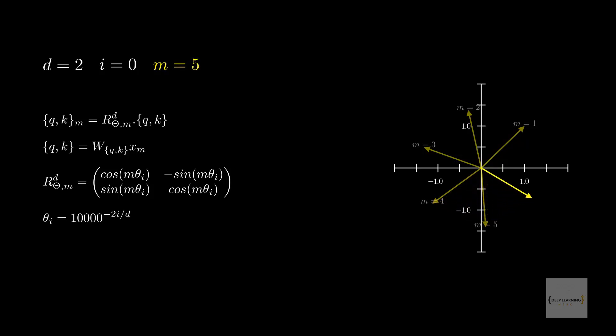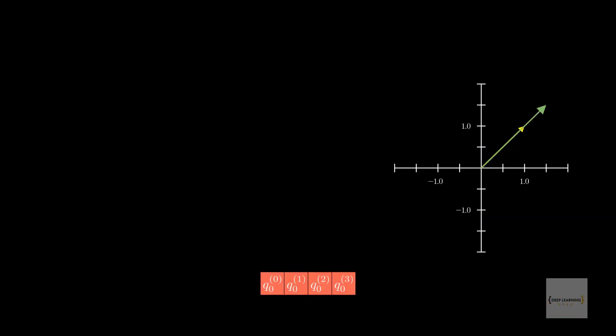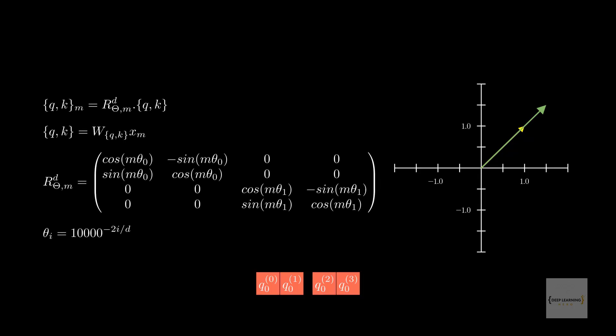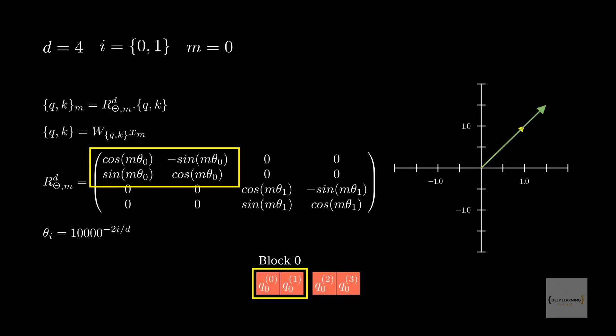But one question still remains. How does this scale to d greater than 2? Since we have an R that can only rotate a vector on a 2D plane. For this, they use a trick. They break Q or K into blocks of 2. So for d equals 4, we have 2 blocks. And more generally, for a d-dimensional matrix, you'd have d divided by 2 blocks. Then we can repeat the same operations we did for d equals 2 for each block independently.